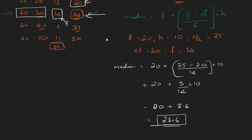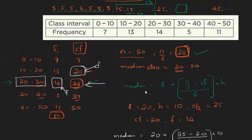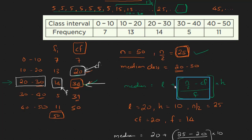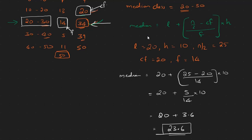The median value is 23.6. So if you calculate the mode, the median, and the median calculation, it will be easy to calculate the mean. Let's finish this chapter. I'll do the next chapter in the next video. Thank you.